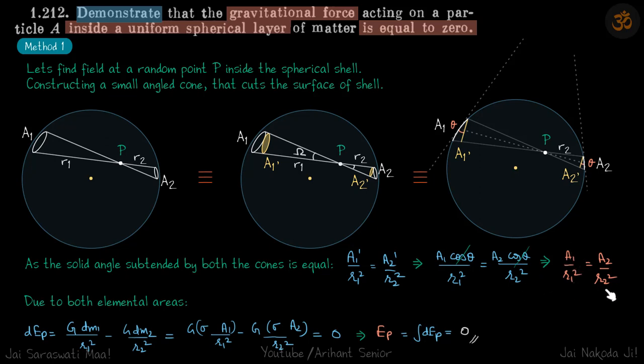Now let's write the field at P because of these two elemental areas. Small field dEp due to A1 and A2 we can write as G dm1 by r1 square minus G dm2 by r2 square. Why minus sign? Because the field due to here and here will be in opposite directions.